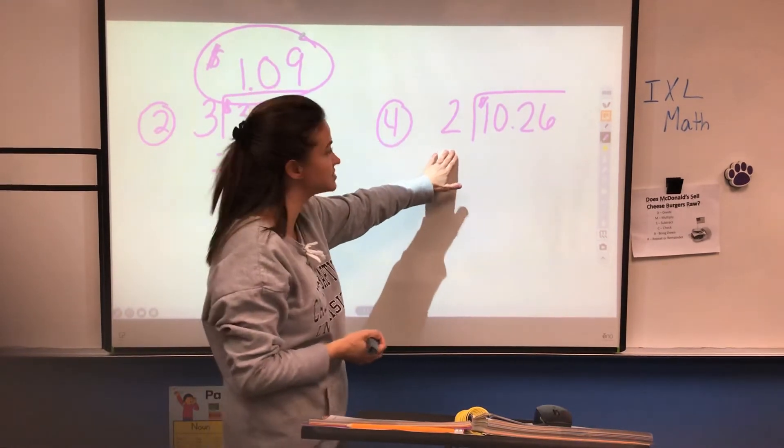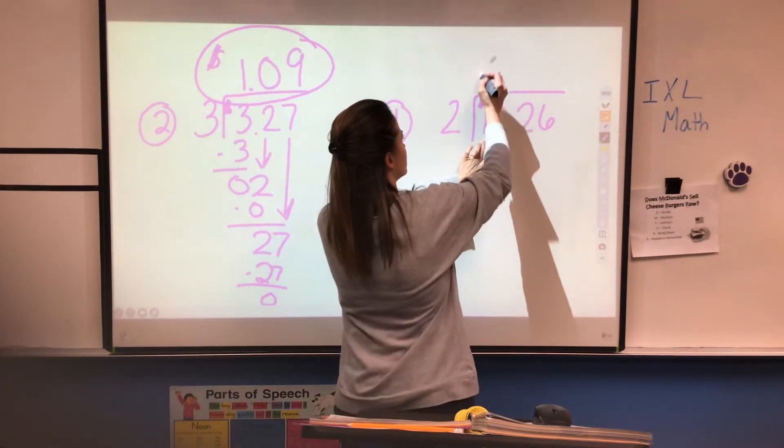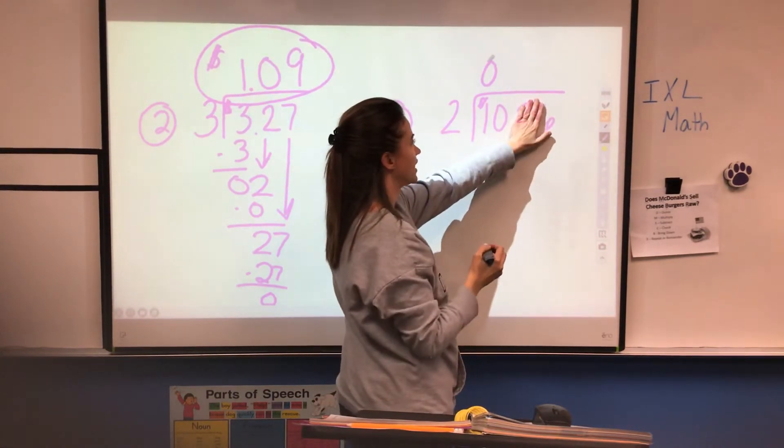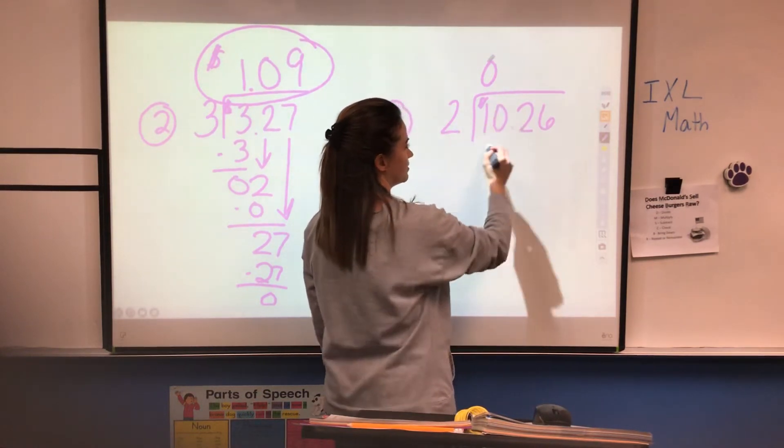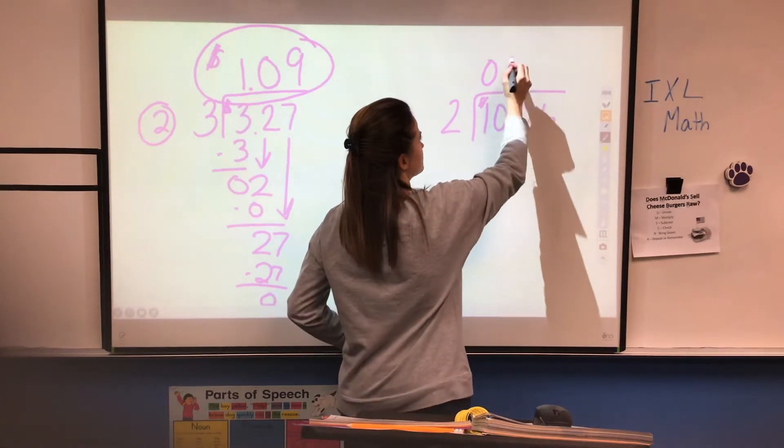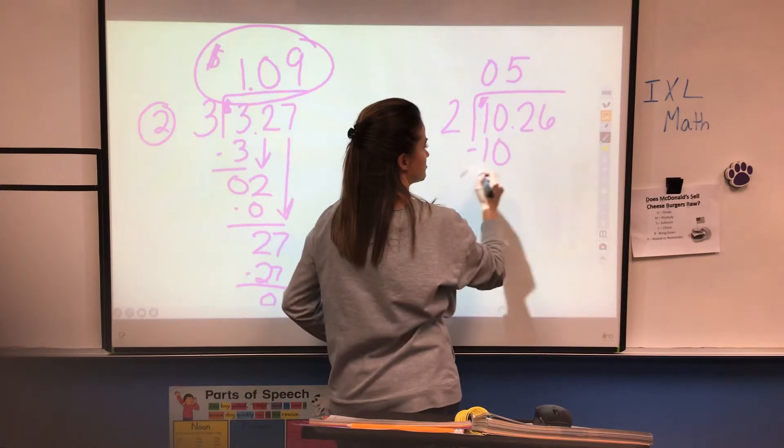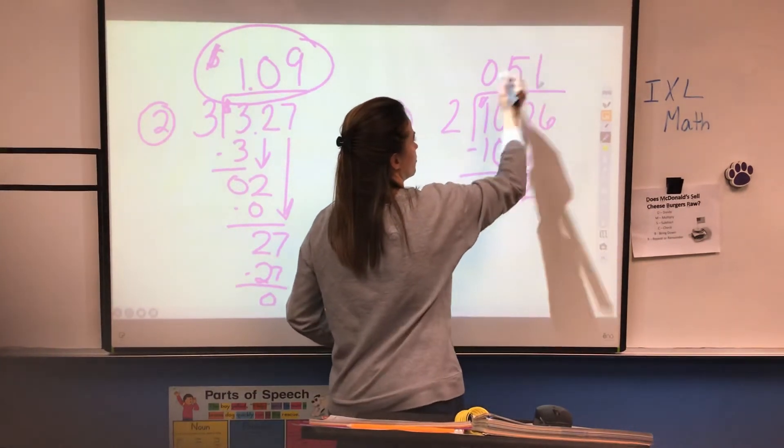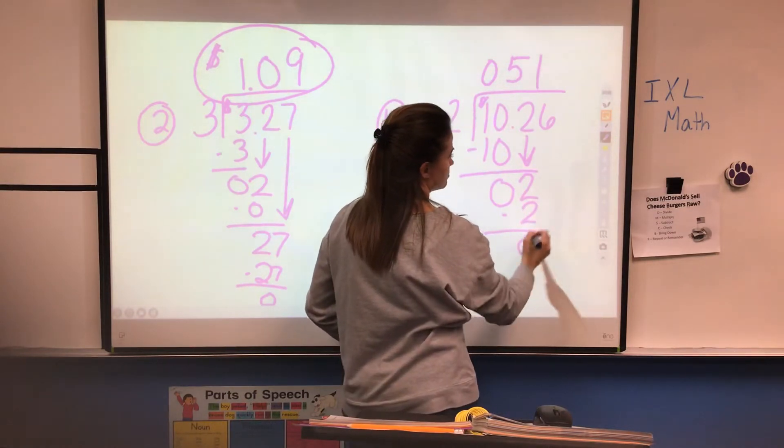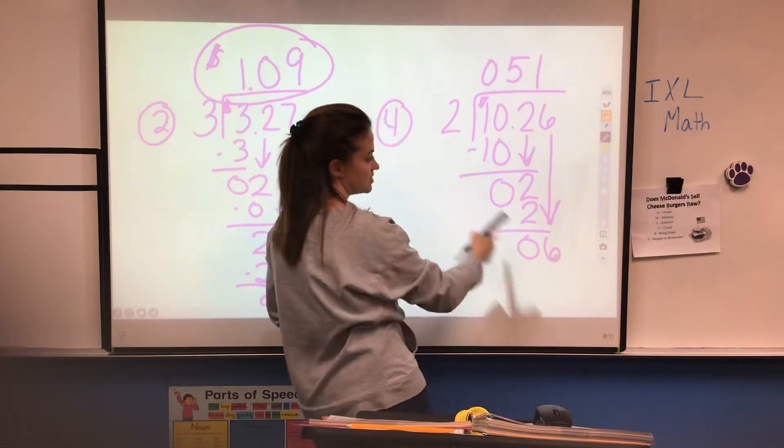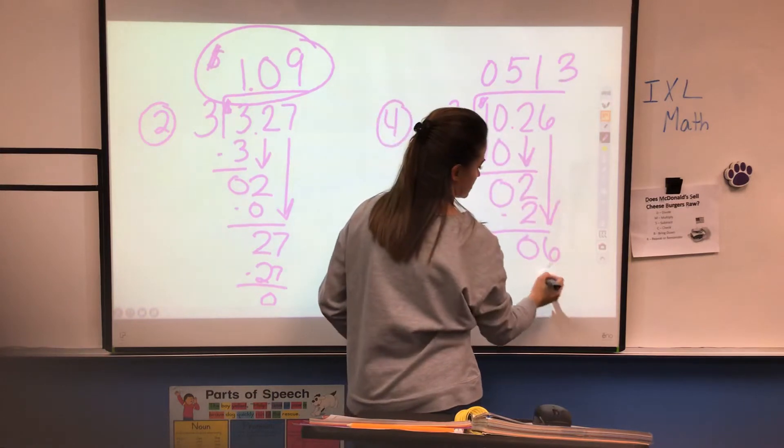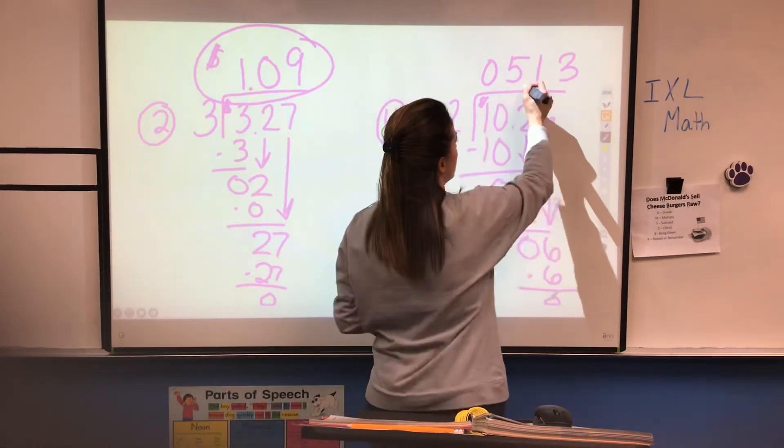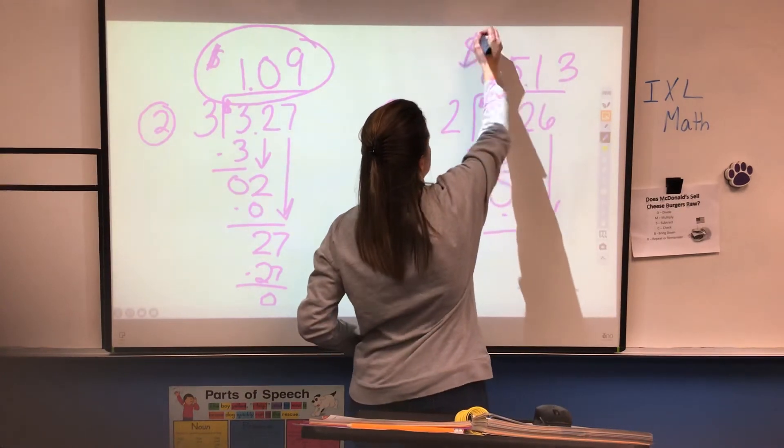We're going to look at number four in your guided practice. Can two go into zero? No, it cannot. You can either do this step where you go zero times two is zero, or you just go to the next number. How many times can two go into 10? Two can go into 10 five times. Five times two is 10. We're going to subtract, get zero. Bring your two down. Two goes into two one time. One times two is two. Bring down your zero. Now bring down your six. Two can be divided into six three times. Three times two is six. I get zero, so this part of my problem is done. Now I can bring my decimal point up. I know it's correct because there's only two numbers after and I should have $5.13.